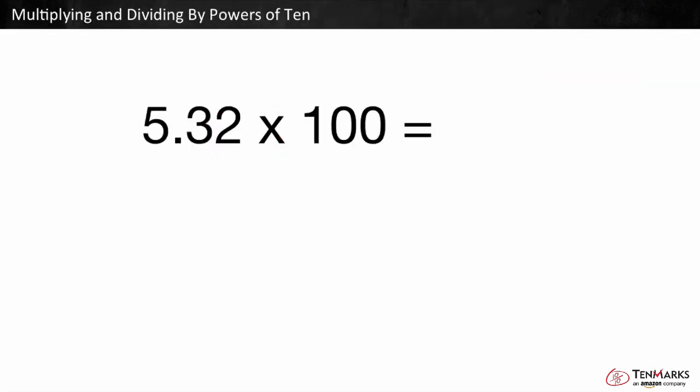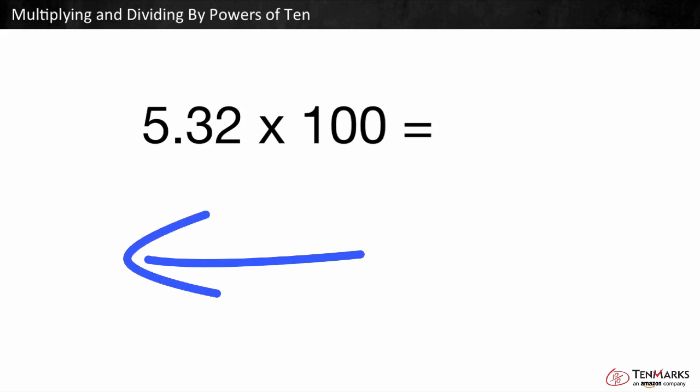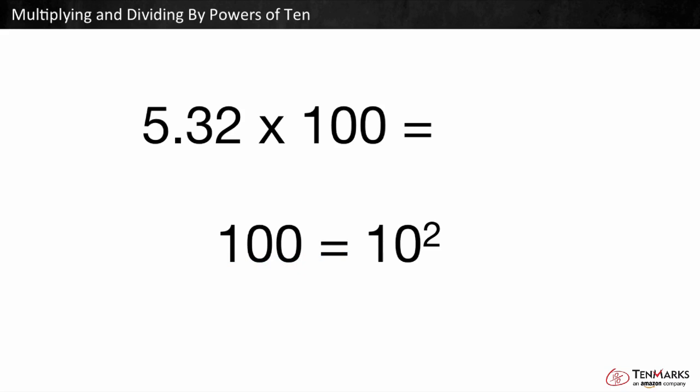Let's look at 5 and 32 hundredths times 100. Based on the pattern we saw before, each digit shifts the same number of places to the left as the number of 10s it was multiplied by. 100 is the same as 10 to the second power, which means it is being multiplied by itself two times. So we move the digits left two times, meaning 5 and 32 hundredths times 100 is equal to 532.